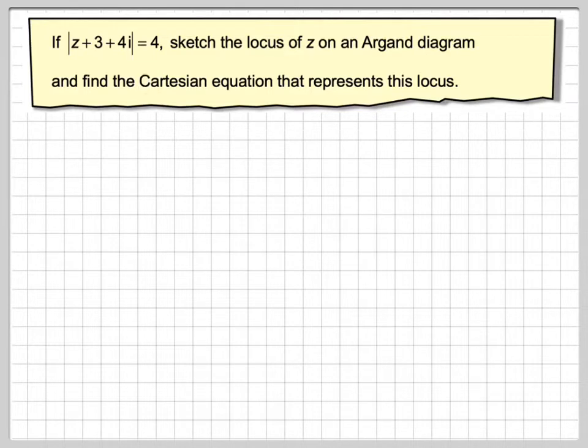Sometimes it's easier rather than trying to sketch it to find the Cartesian equation first. So let's just have a look to see how to do that. So we've got the modulus of z plus 3 plus 4i is equal to 4. z can be represented by x plus iy. This is the general format of a complex number.